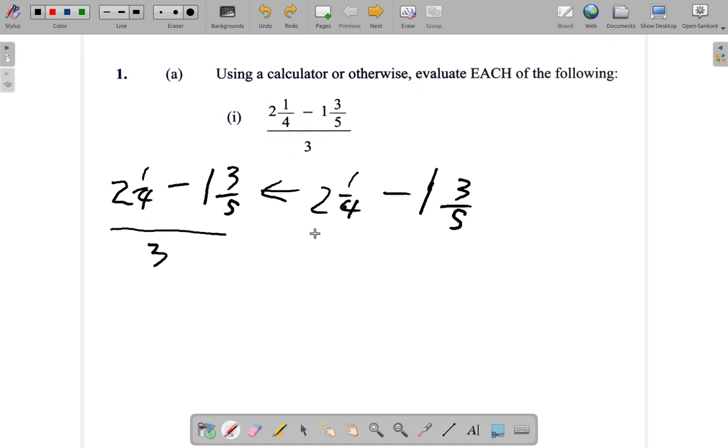You remember what you do: turn them into improper fractions. 4 times 2 is 8, 8 plus 1 is 9, so you have 9 over 4 here. Minus 5 times 1 is 5, 5 plus 3 is 8, so it's 8 over 5. This comes out to 9 over 4 minus 8 over 5.